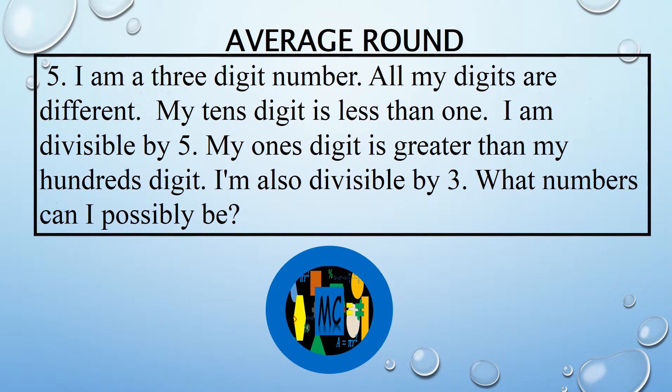I am a three-digit number. All my digits are different. My tens digit is less than one. I am divisible by five. My ones digit is greater than my hundreds digit. I am also divisible by three.